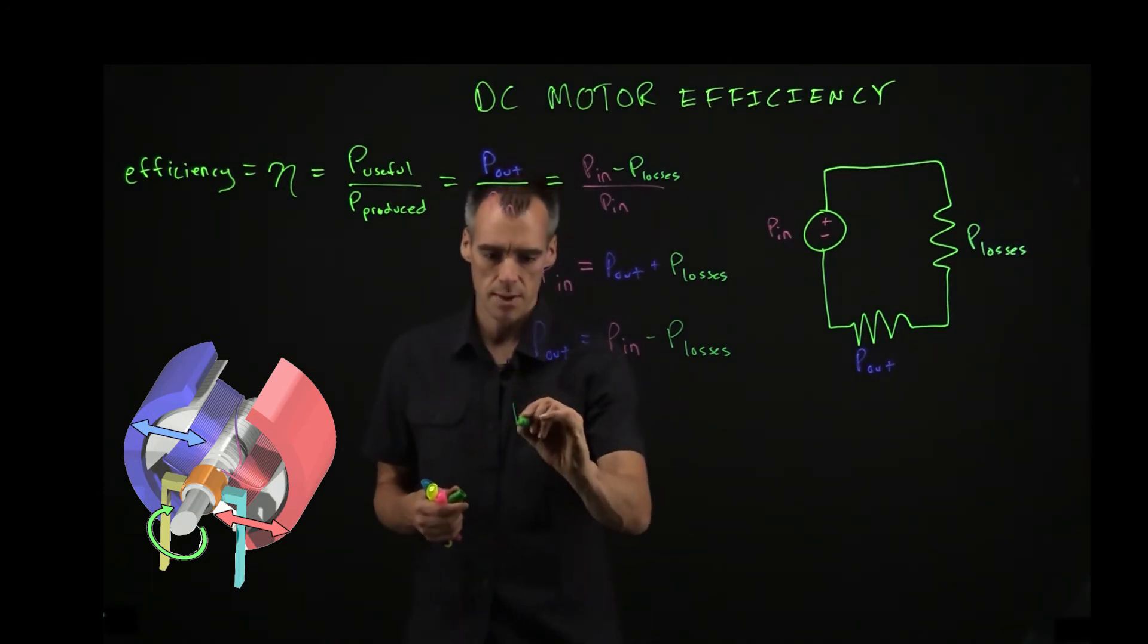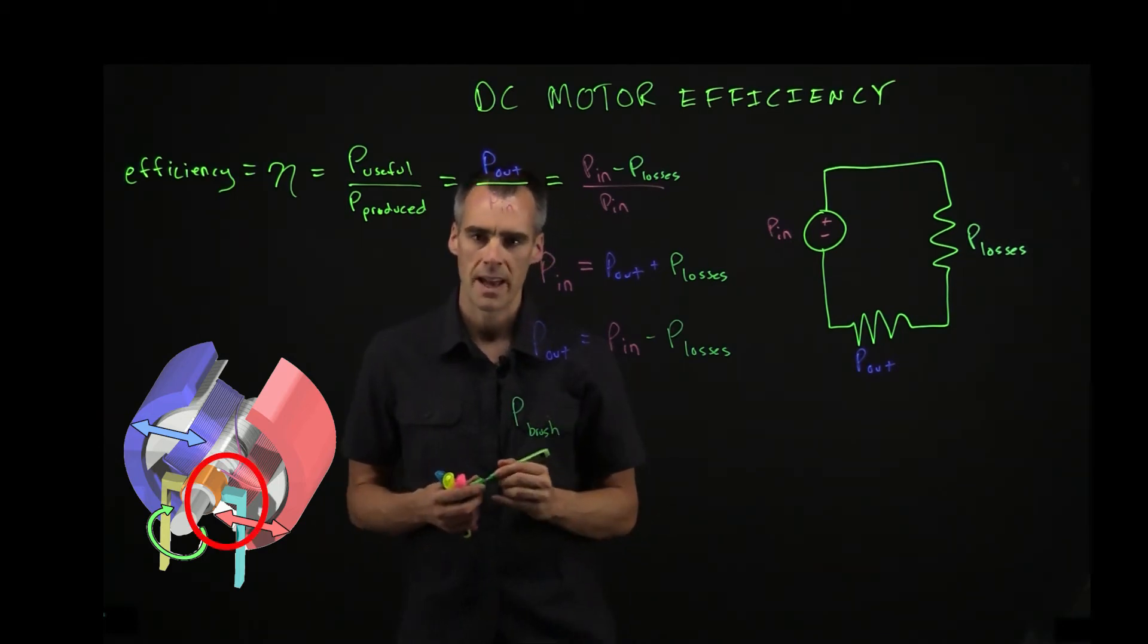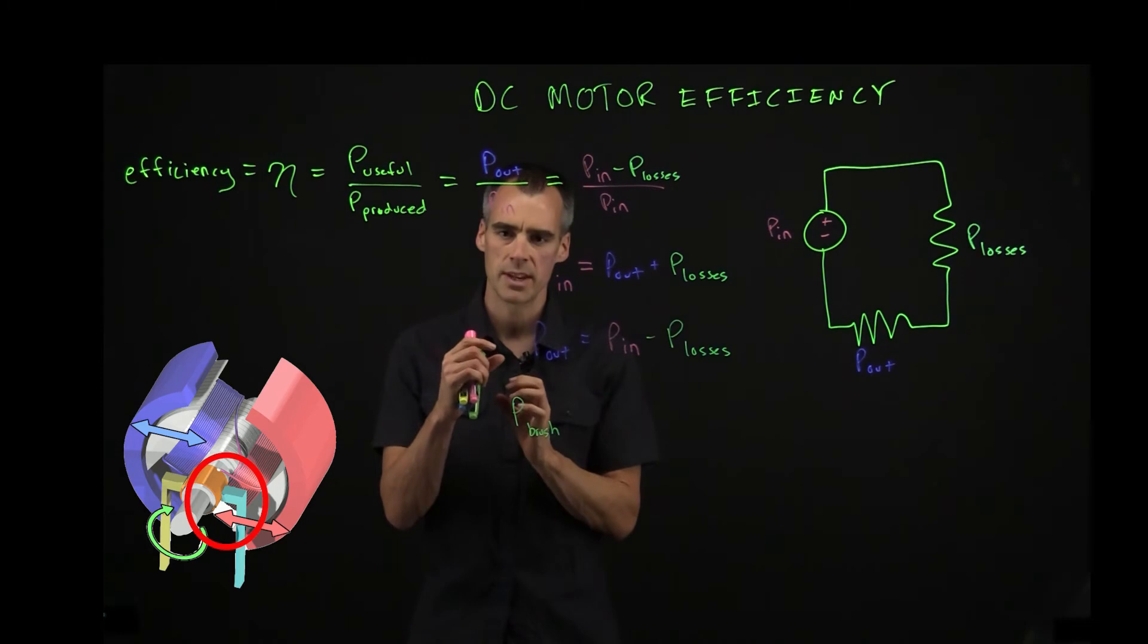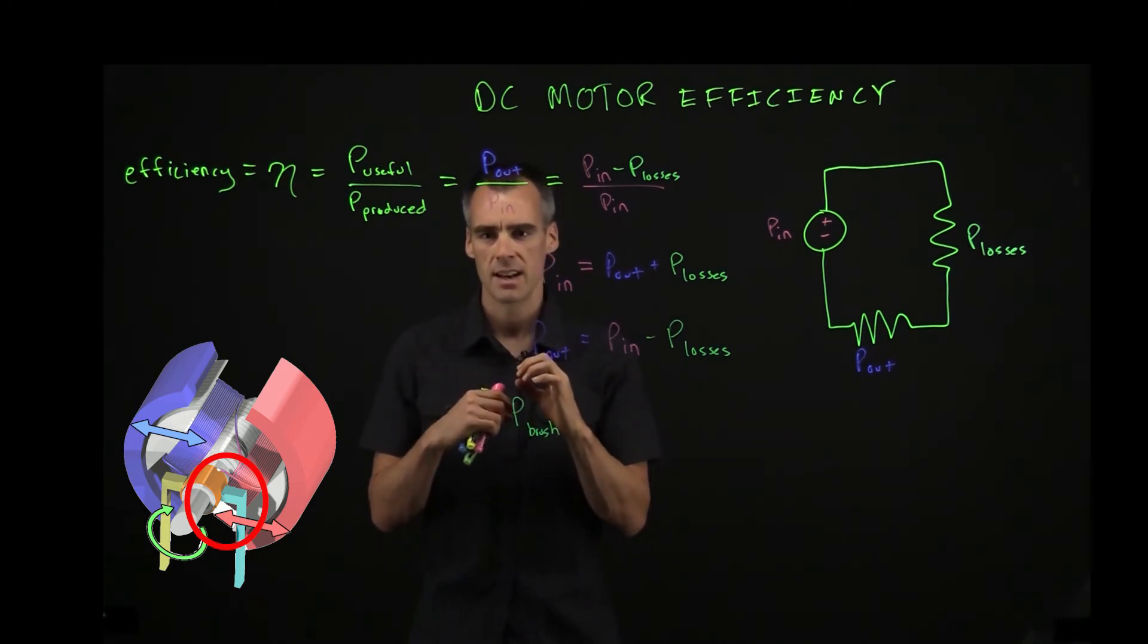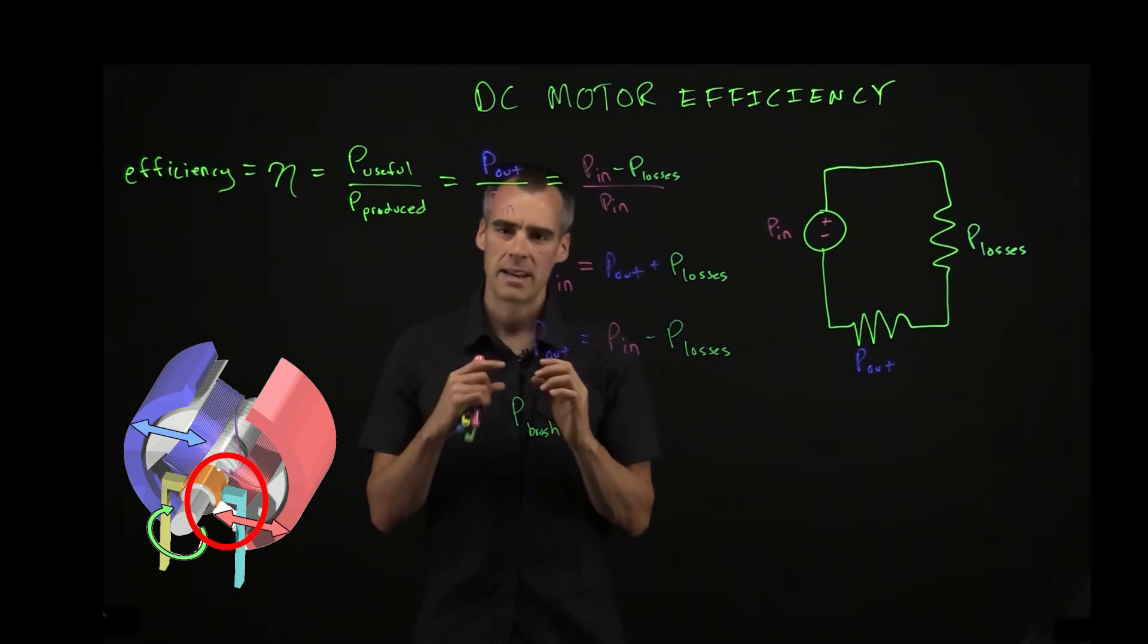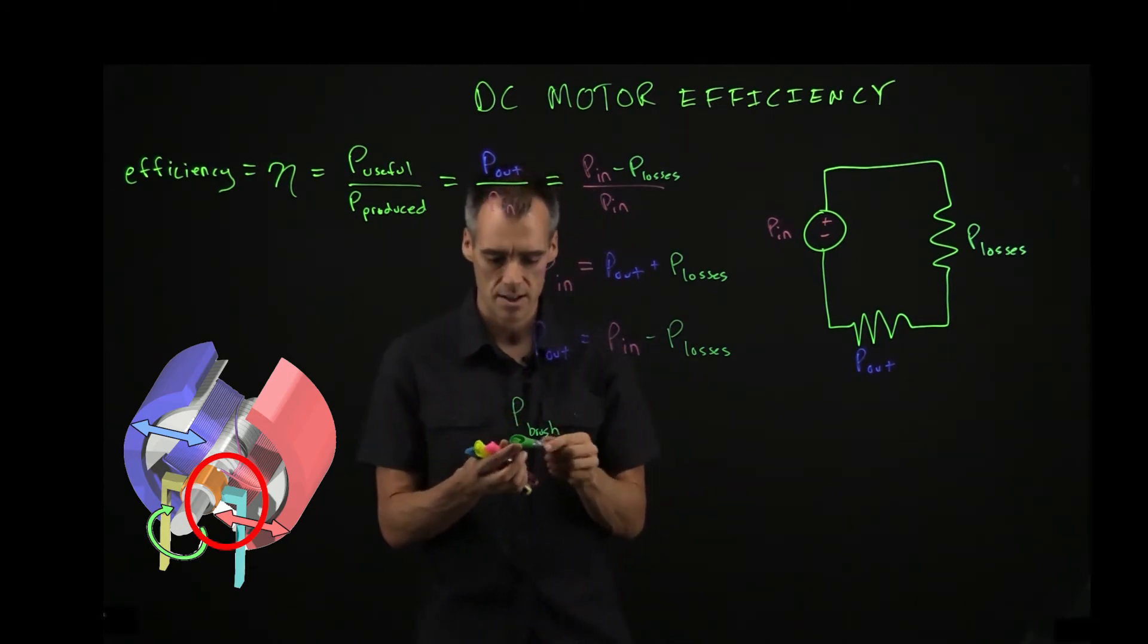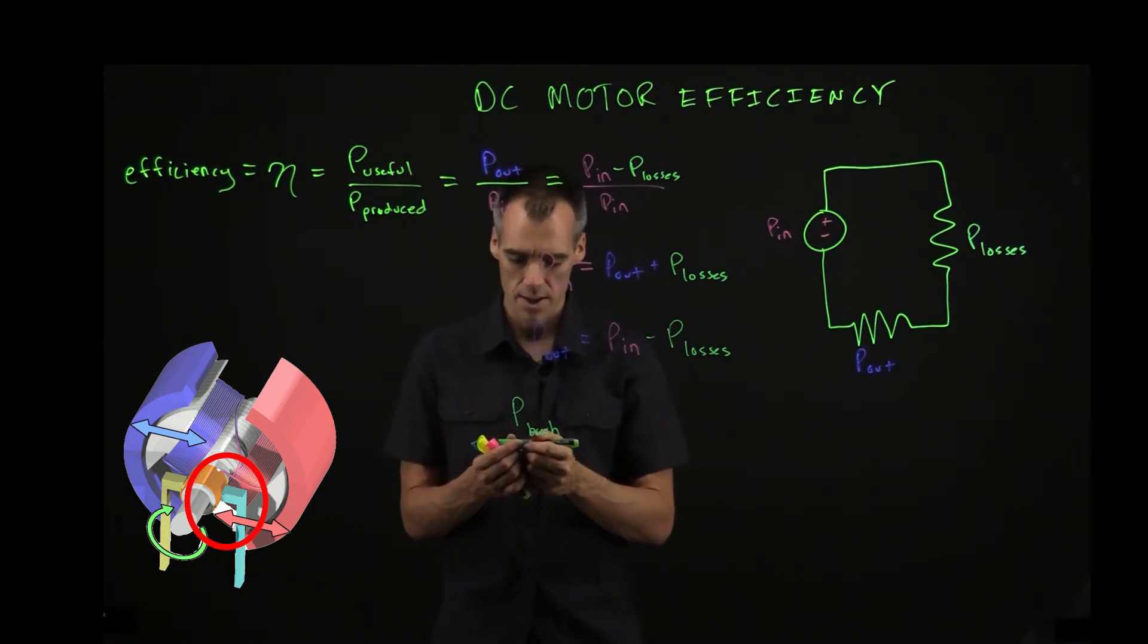So first one is going to be, let's call it P brush. As that rotor moves and that brush is going to change on the commutator from one side to the other side, there's going to be some friction there, and there's also going to be some sparking, and there's going to be some loss with the friction and with electrical loss there. So that's going to be one of them.